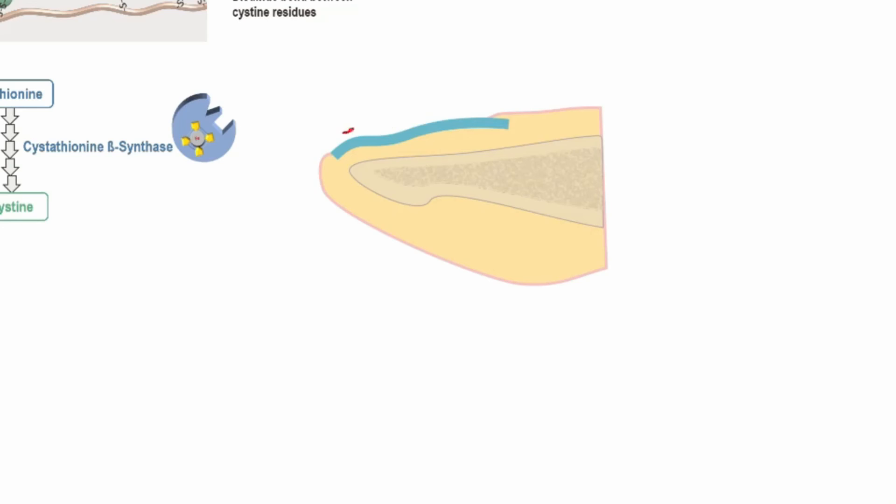There will be central concavity or depression along with inverted margins. Thus, the nail adopts a spoon-like shape. Normal nail turns into a spoon-shaped nail, and this is called koilonychia. Koilonychia means spoon-shaped nail and is a characteristic finding of iron deficiency anemia.